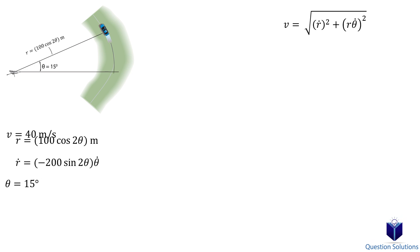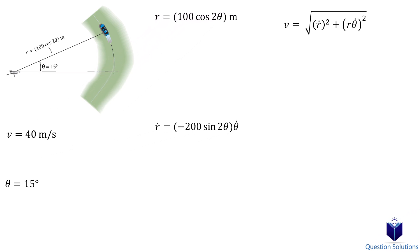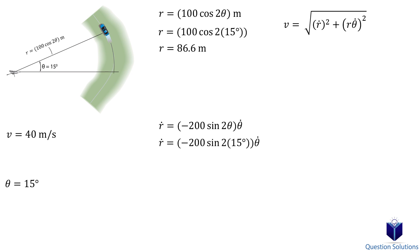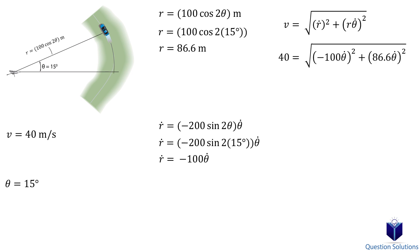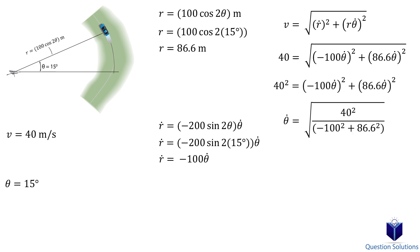So we take the derivative of our position equation. Then we figure out the values when theta equals 15 degrees: first for the position equation, then for its time derivative. Now that we have all the pieces, we use the magnitude of velocity equation, plug in everything we know, and solve for the angular velocity. Squaring both sides and solving gives us our answer.